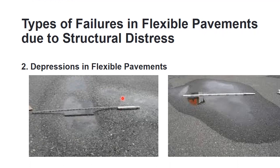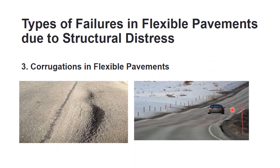The second structural distress type is depression. These are certain localized areas in the pavement that have a lower elevation compared to the surrounding pavement layer. These depressions are mainly noticed only when they are filled with water. The third type is corrugations, which are distress seen in the pavement at regular intervals in the form of ridges and valleys.